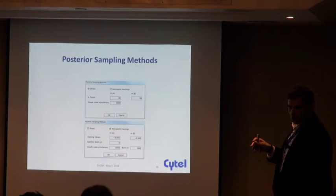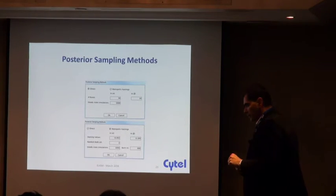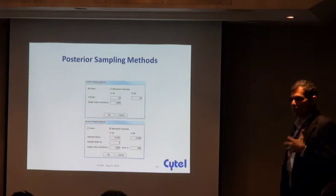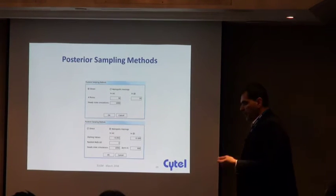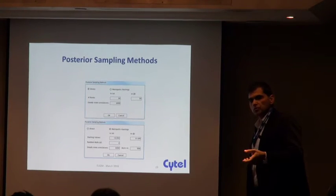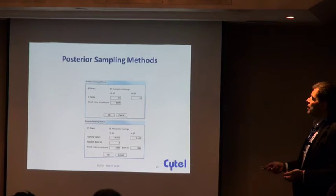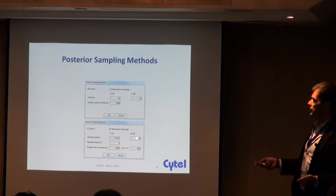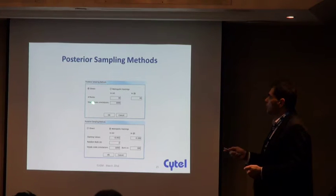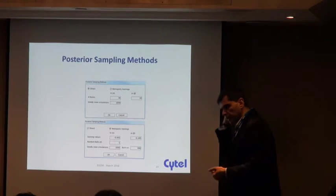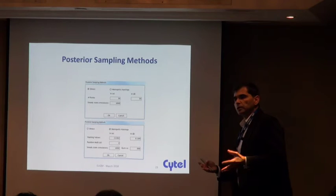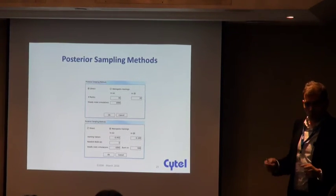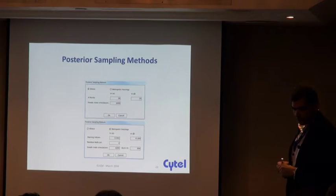Neuenschwander also gives different ways of eliciting information on the predictive probability space to model back to a prior distribution. In terms of estimation, since inference is based on the posterior distribution — which is not trivial — Markov Chain Monte Carlo methods must be employed. You can use the Metropolis-Hastings algorithm or a direct sampling method developed internally within Cytel for sampling from a four-parameter logistic function, which works even better for the two-parameter case.